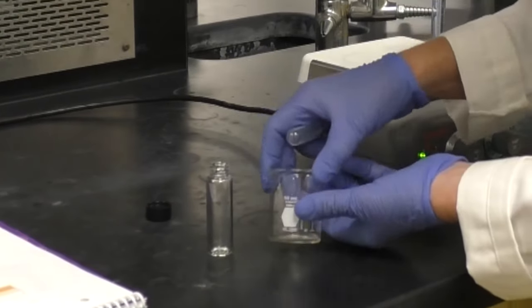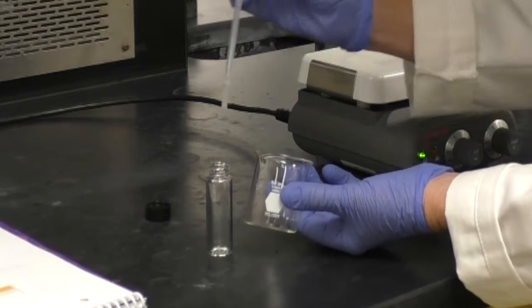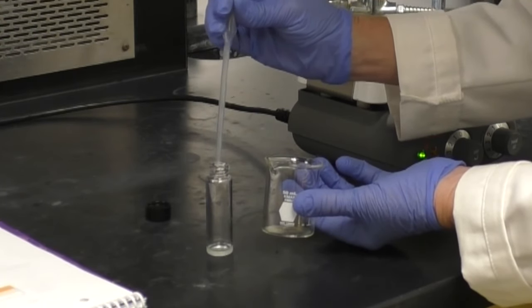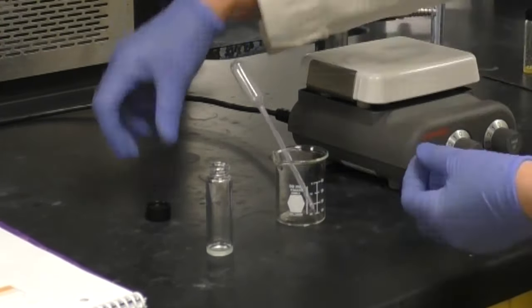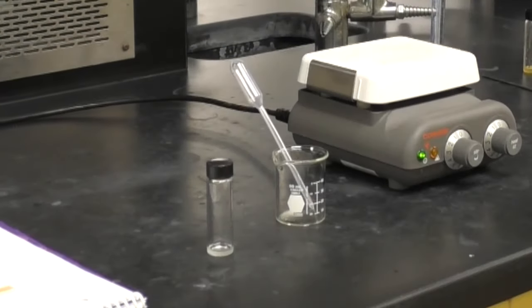Pre-weigh another 4-dram vial and record the weight. Pipet the limonene from the beaker into the vial. Weigh it and record the mass. Label the vial as limonene.